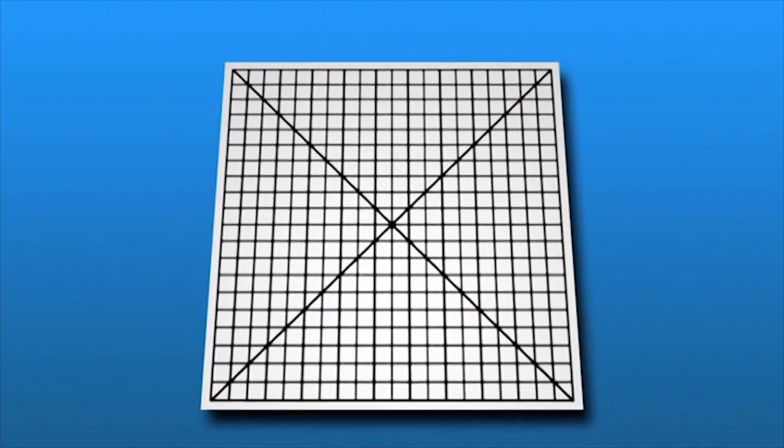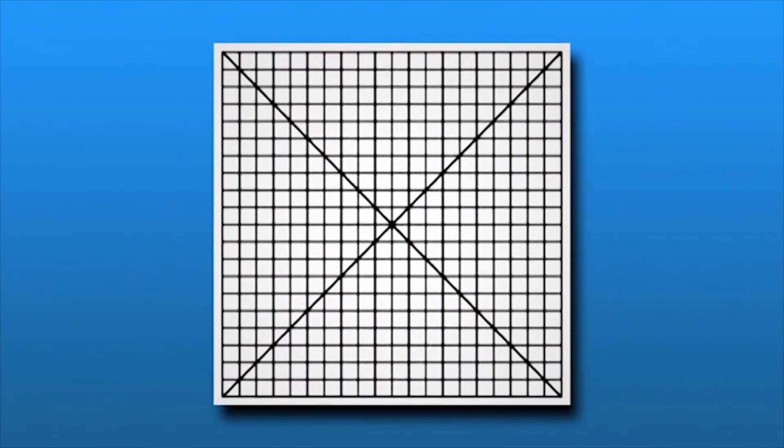A basic yet important tool for monitoring your vision is called an Amsler grid. You can use it at home to detect changes in your central or macular field of vision.